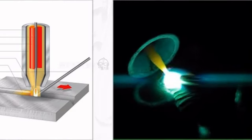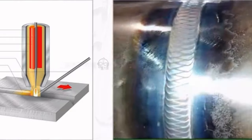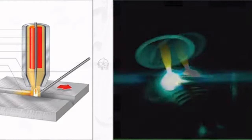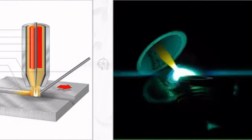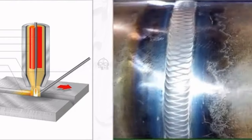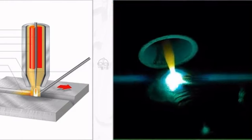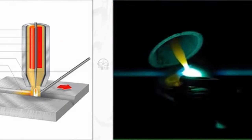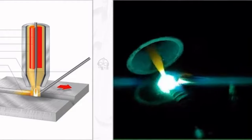TIG welding offers excellent weld quality, with aesthetically pleasing welds and no slag, making it visible and easy to operate. It's widely applicable, capable of welding almost all metal materials. However, TIG welding has a relatively small current, so the welding speed is slower, and argon is expensive, leading to higher costs.